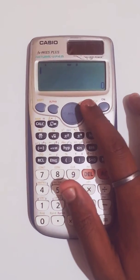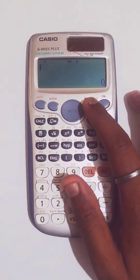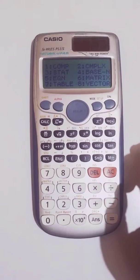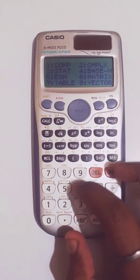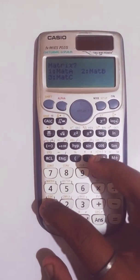we go to mode button that is in your calculator. Press mode and go to 6 matrix, then press 1 matrix A.